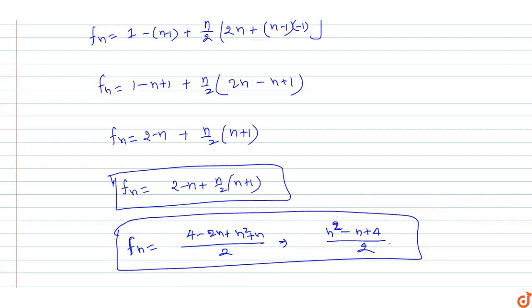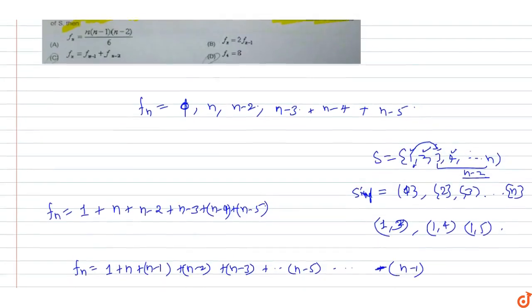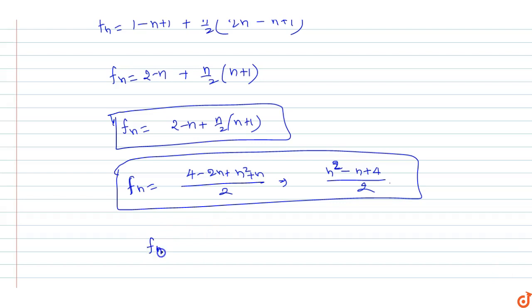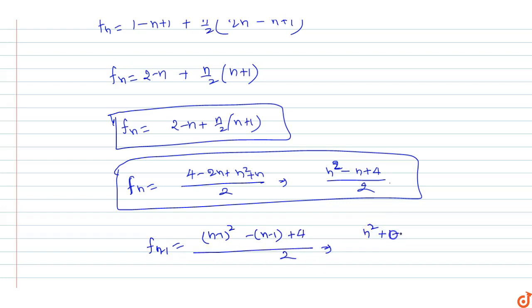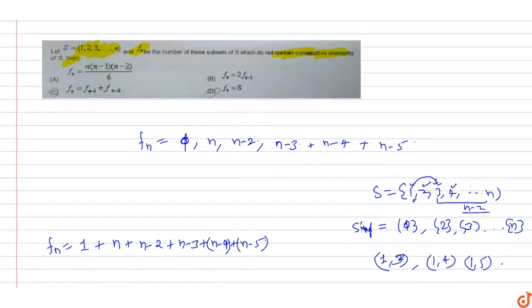Now we find f(n minus 1). Substituting n minus 1 into the formula: f(n-1) = ((n-1)² minus (n-1) plus 4) / 2 = (n² plus 1 minus 2n minus n plus 1 plus 4) / 2 = (n² minus 3n plus 6) / 2.